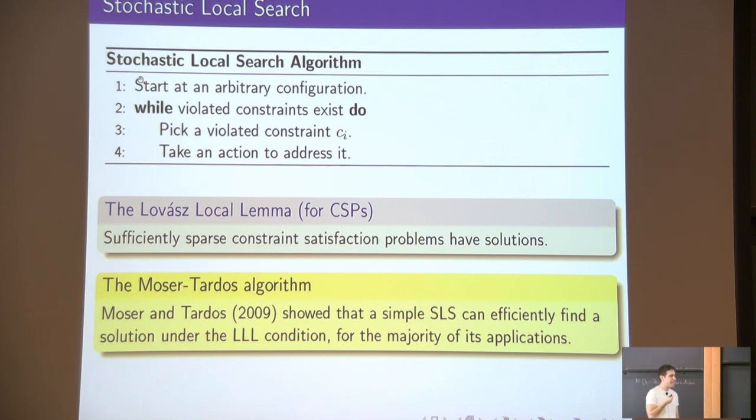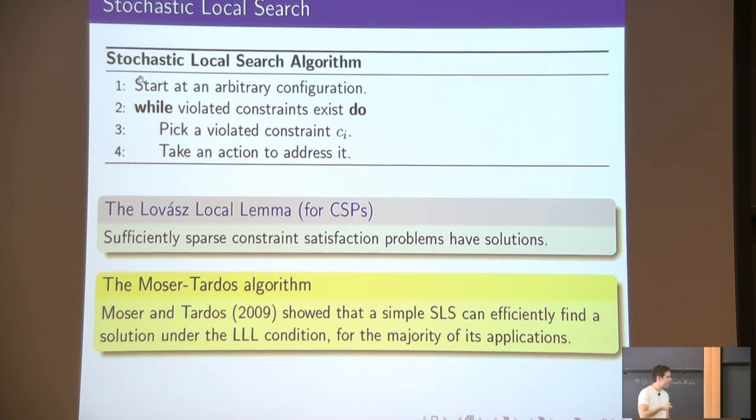This used to be an existential statement, so there was no efficient algorithm for it, up until ten years ago when Moser and Tardos made it constructive by analyzing a simple algorithm like this. And this has inspired a whole lot of work, a plethora of papers. Myself, I have been quite active in this area, trying to extend their tools and their techniques for analyzing this type of algorithm.